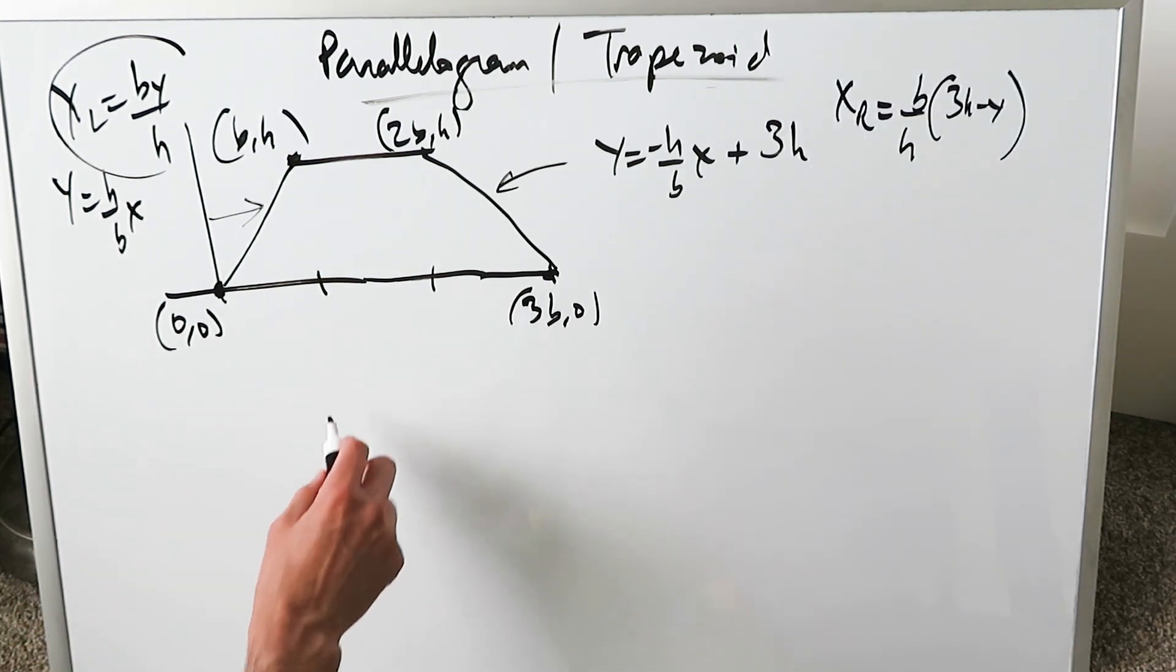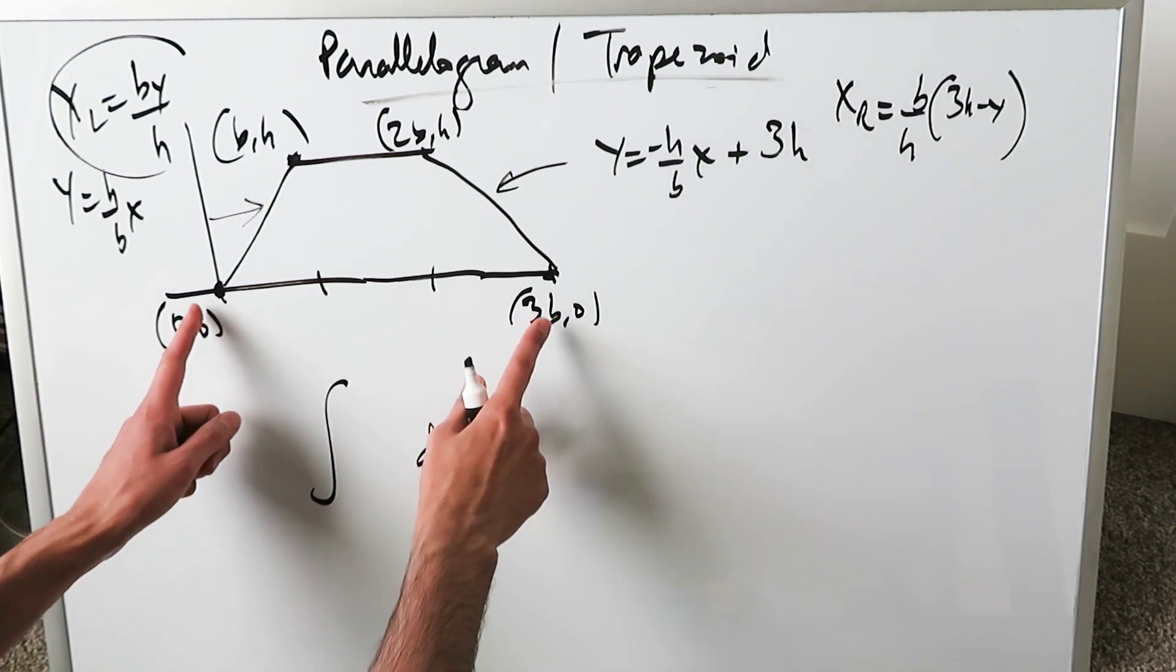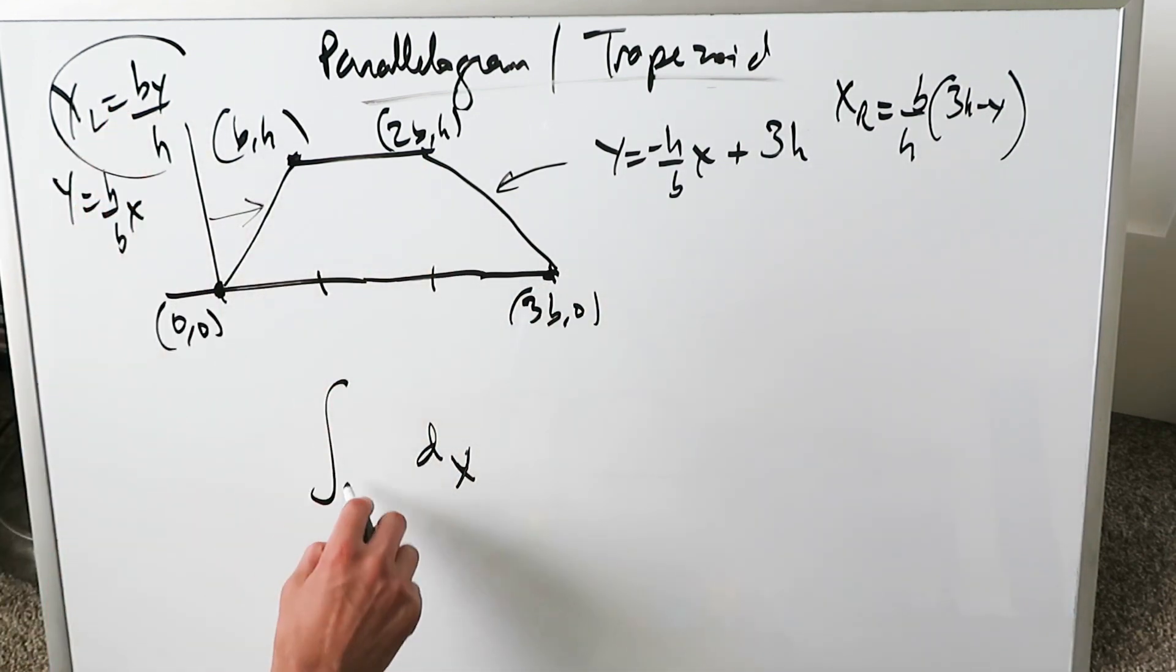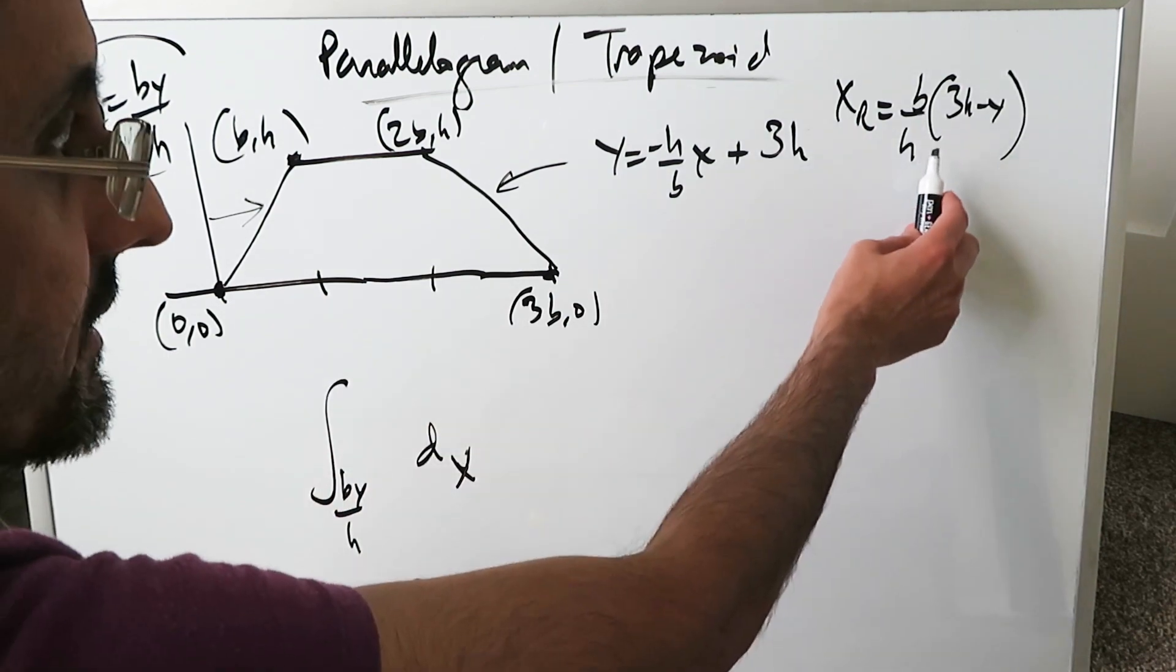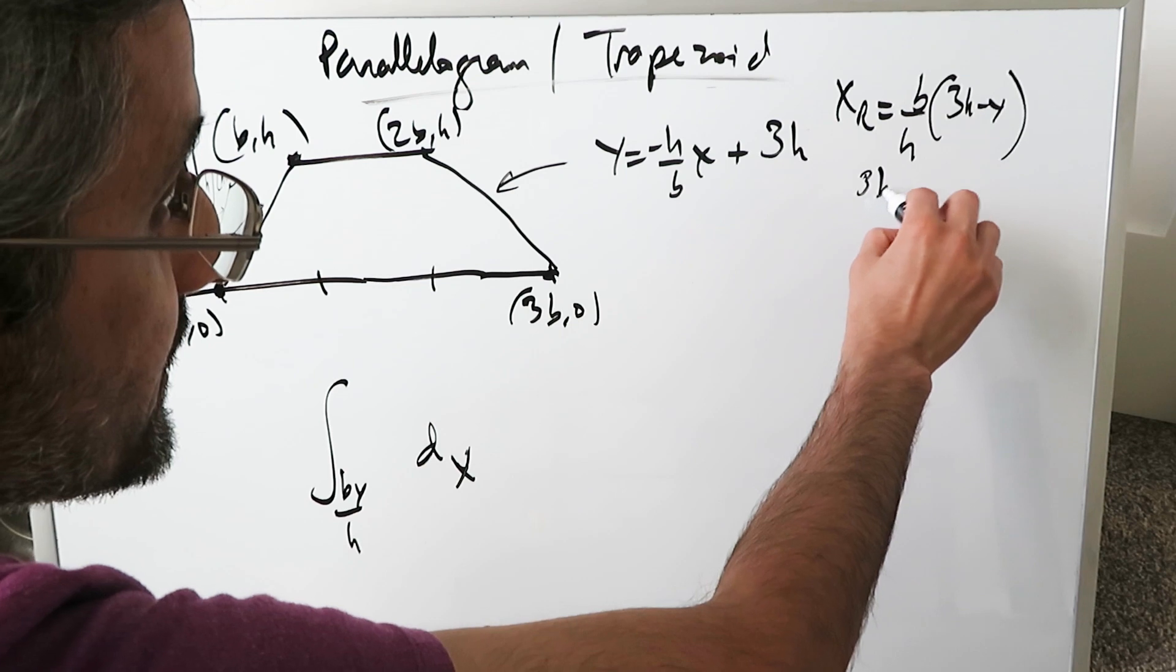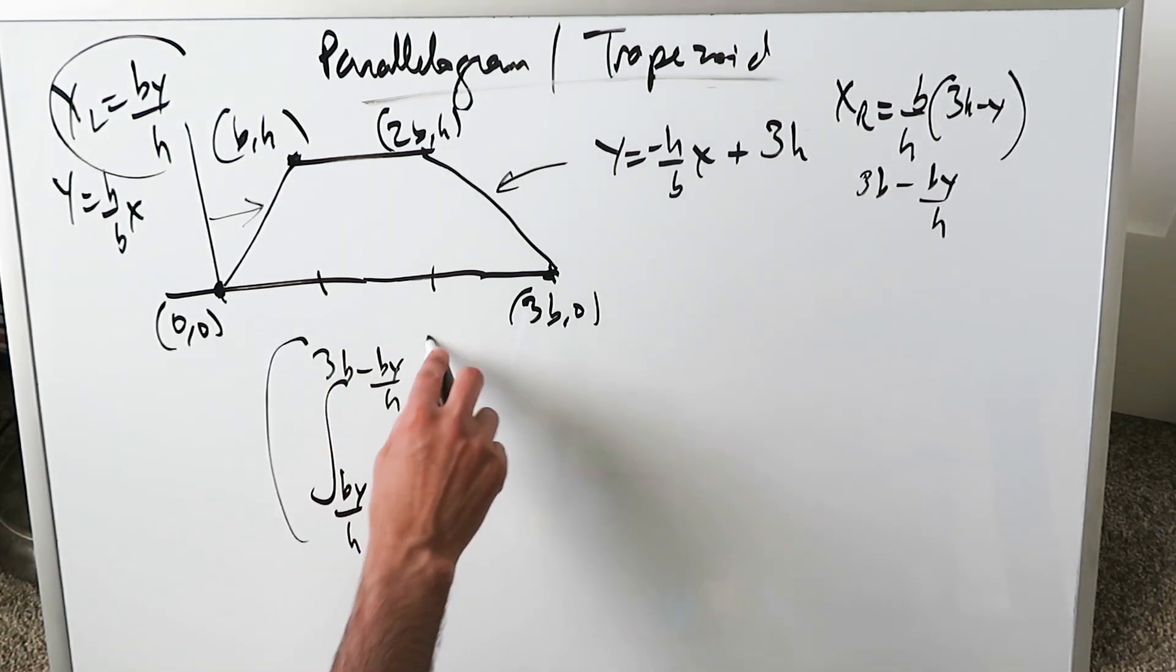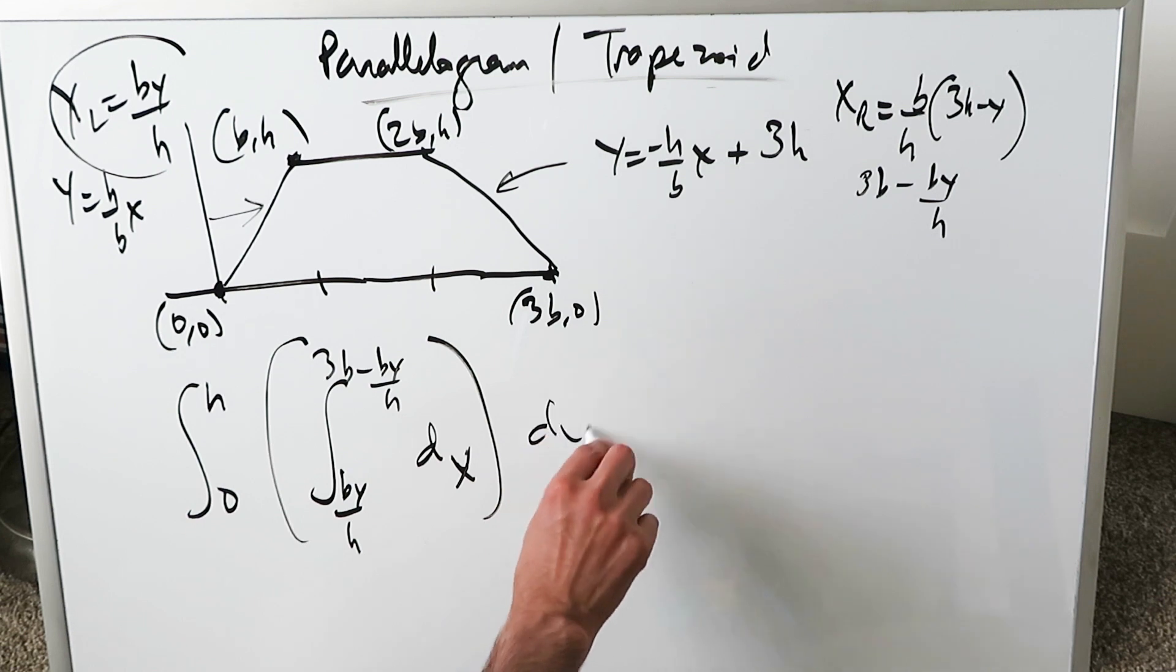We bring these into the limits. The dx integral from 0 to 3b is replaced because when moving upwards, I'm tracing a curve and converging. I need the equations. Lower limit: by/h. Upper limit: (b/h)(3h - y) = 3b - by/h. All of this will integrate upwards from 0 to h with respect to dy.